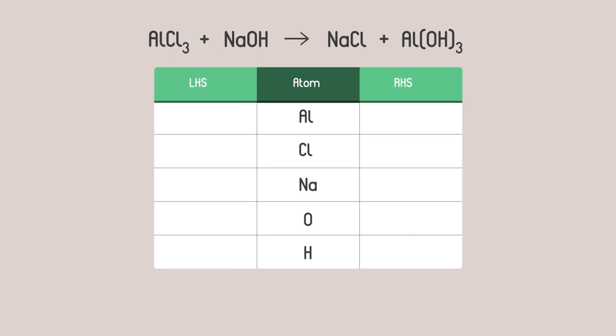Pause the video and try filling in this table. Are you ready? These are the numbers you should have found. We can see that the metals are balanced, but there are three times as many chlorine atoms on the left and three times as many oxygen and hydrogen atoms on the right.